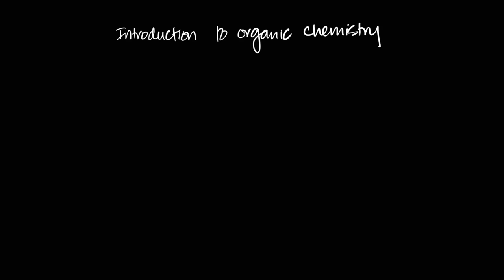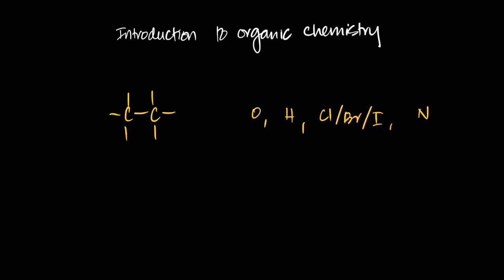Today we'll be starting the next section of our chemistry — organic chemistry. This video is an introduction to organic chemistry. What is organic chemistry? It is the chemistry of compounds of carbon, generally bonded with hydrogen, oxygen, nitrogen, and halogens. You'll see a lot of carbons bonding with each other, bonding to oxygen, hydrogen, chlorine, bromine, and iodine. In secondary chemistry you'll also find out about nitrogen compounds.